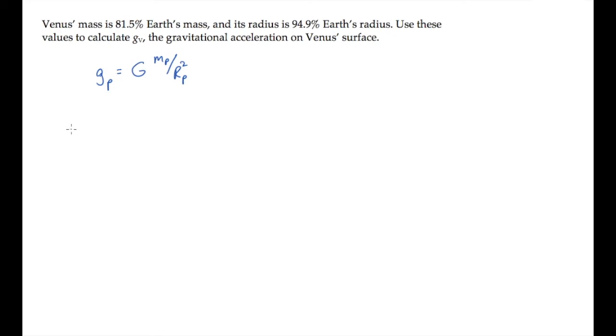The ratio then of these accelerations on Venus to Earth equals capital G times mass of Venus over radius of Venus squared, divided by capital G times the same quantities for Earth. The capital G cancels, giving us the ratio of the masses multiplied by the inverse squared ratio of their radii.